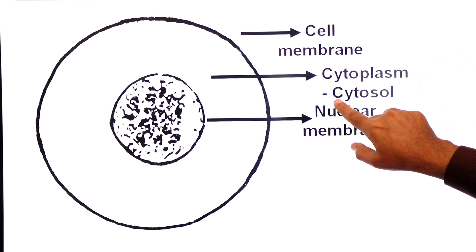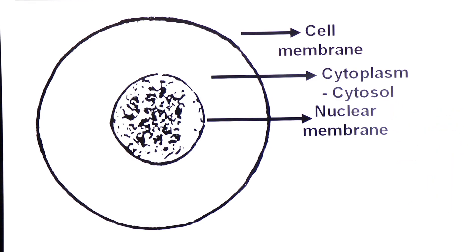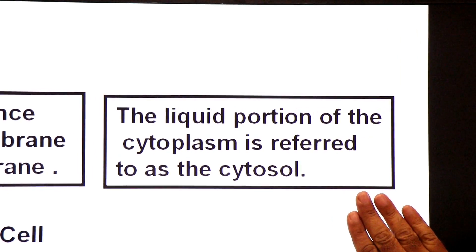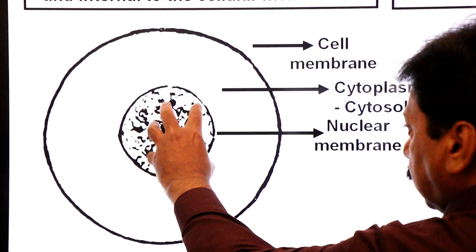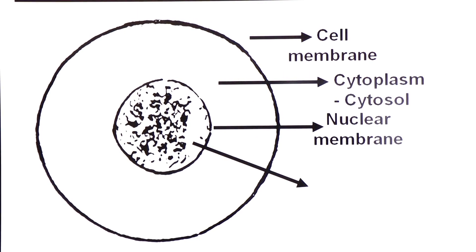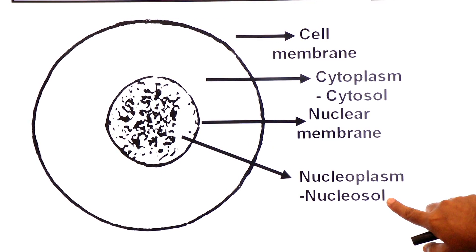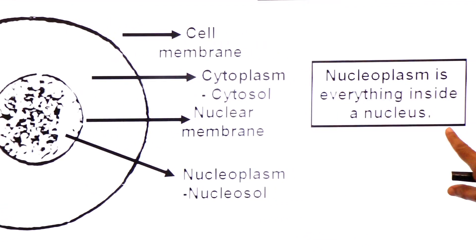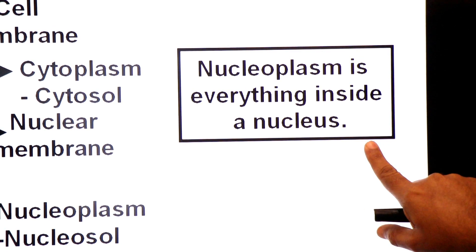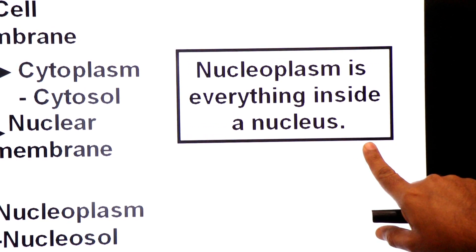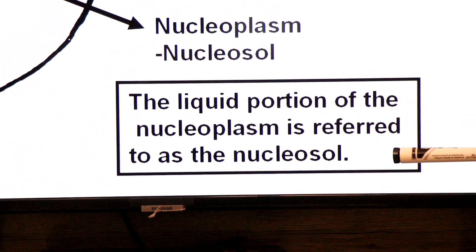And cytoplasm has a fluid portion, that fluid portion is called cytosol. Now what is cytosol? The liquid portion of the cytoplasm is referred to as cytosol. And dear students, the substance inside the nucleus is called nucleoplasm. And the fluid inside nucleoplasm is called nucleosol. The liquid portion of the nucleoplasm is referred to as nucleosol.